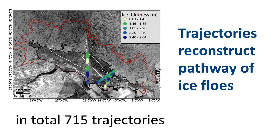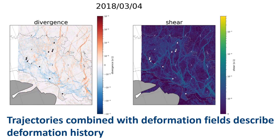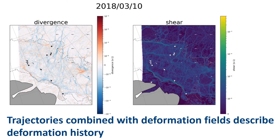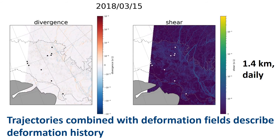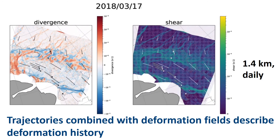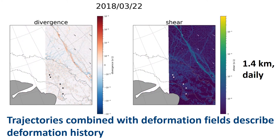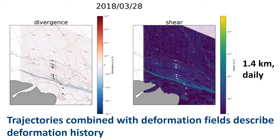Here on the map, this is shown exemplarily for four trajectory lines, but in total we calculated 7,015 trajectories. The trajectories alone didn't tell us about deformation, so we calculated deformation fields from the velocity fields — shown here in the background — and combined that information with the trajectories. This means we observed how much ridging and how much lead opening each section of ice experienced along its pathway until it was measured by our thickness survey. We compared deformation information at a 1.4-kilometer spatial scale and nearly daily resolution with the thickness observations. This deformation history was then stacked and averaged for comparison with thickness information.